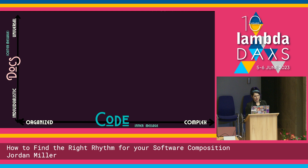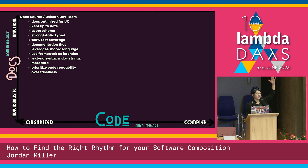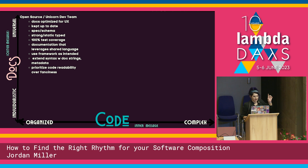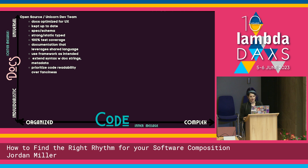We can put these spectrums on a sort of matrix and start to visualize where we are and then where we want to be. So the best case scenario is that your documentation — your outer message — is established with some sort of shared language your team has adopted, and your code is also very organized. Open source projects are often very good role models of this, or a unicorn developer team that has been working together a very long time. This documentation is optimized for the human experience — it's not in org mode, it's somewhere everybody can appreciate it.